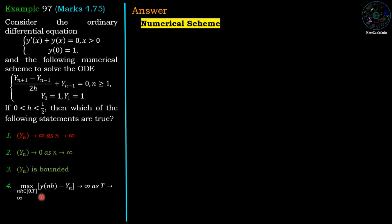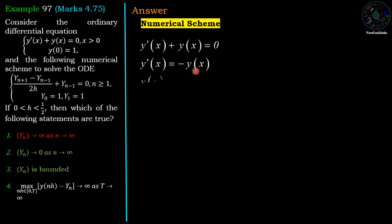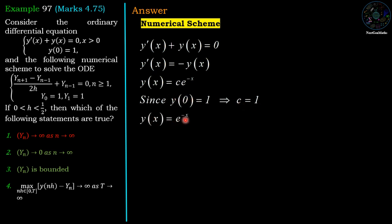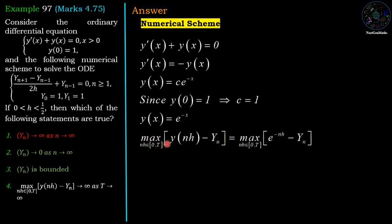For option 4, we need the analytic solution y(nh). Solving y' + y = 0: y' = -y, giving y = c·e^{-x}. Applying y(0) = 1 gives c = 1, so y(x) = e^{-x}. Then max over nh in [0, t] of |y(nh) - y_n| = |e^{-nh} - y_n|. We can show this value approaches 0 as t → ∞, not infinity — so option 4 is wrong.